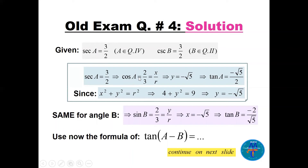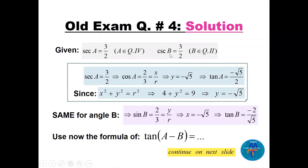From sec(a) = 3/2, the reciprocal gives cos(a) = 2/3, so x = 2 and r = 3. Using x² + y² = r², we get y² = 9 − 4 = 5, so y = −√5 (negative because a is in quadrant four). Therefore tan(a) = y/x = −√5/2. For angle b, from csc(b) = 3/2 the reciprocal gives sin(b) = 2/3, so y = 2 and r = 3, giving x = −√5 (negative in quadrant two).